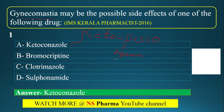I represents isoniazid or INH. S represents spironolactone. C is cimetidine.